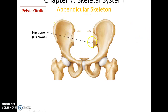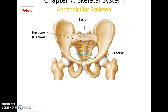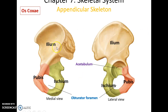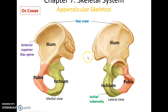The pelvic girdle consists of the hip bones, or os coxae, that attach the lower limbs to the axial skeleton. The pelvic cavity is formed by the sacrum, the coccyx, and parts of the hip bones. Each os coxa has three main parts: the ilium, the pubis, and the ischium. There is a socket called the acetabulum and a hole called the obturator foramen. The iliac crest ends at the anterior superior iliac spine, and there is a rough patch near the bottom called the ischial tuberosity.